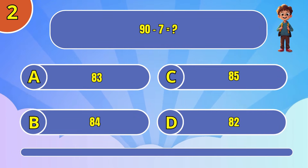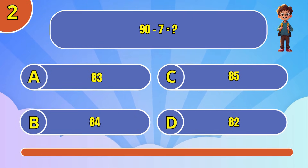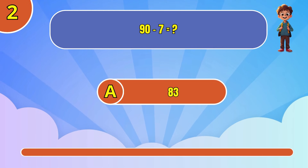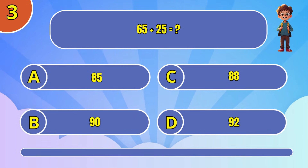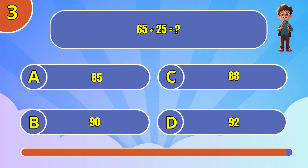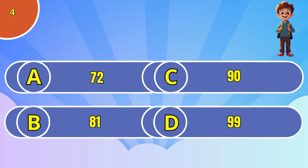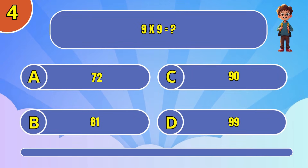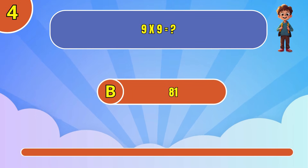What is 90 minus 7? What is 9 times 9? The answer is 81.